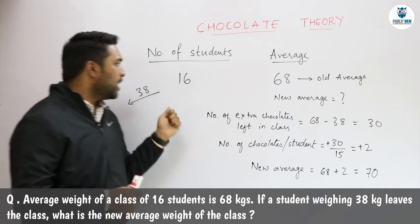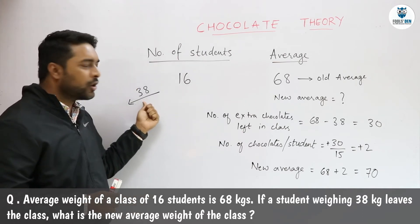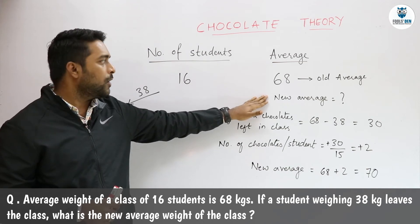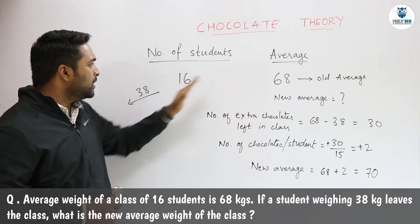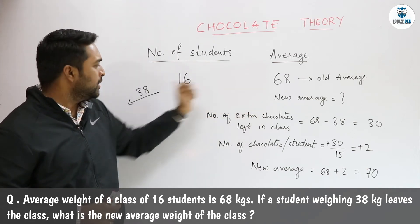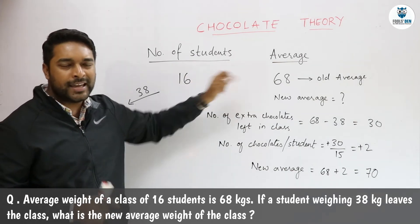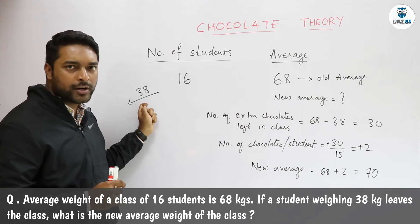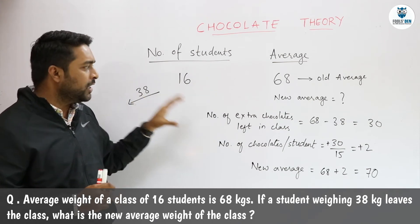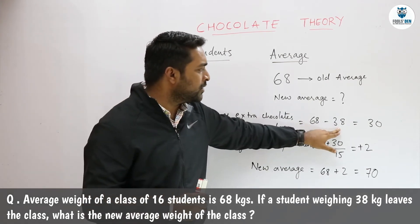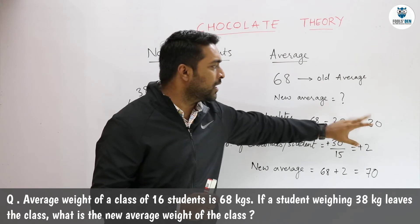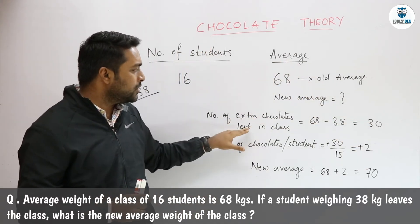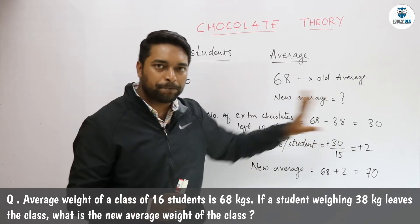A student leaves with 38 chocolates and we have to find the new average of the class. When this student was a part of the class, he had 68 chocolates with him, but he is leaving with only 38 chocolates. That means he is leaving 68 minus 38, which is 30 chocolates, in the class. So the number of extra chocolates left in the class will be 30.